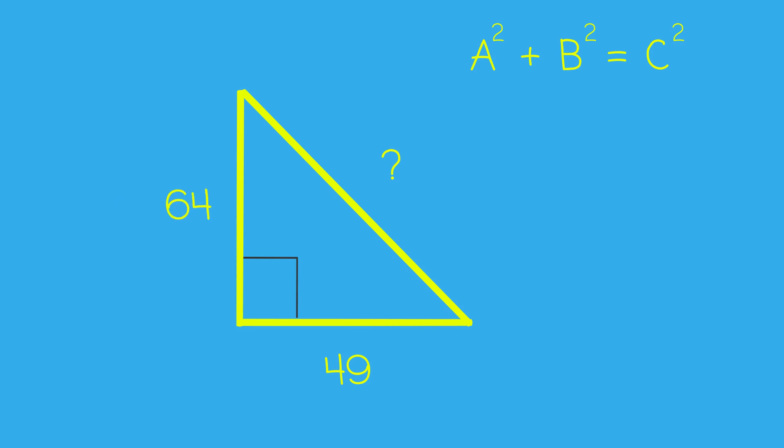Now, we can just add those together to find C squared. And 64 plus 49 gives us 113.